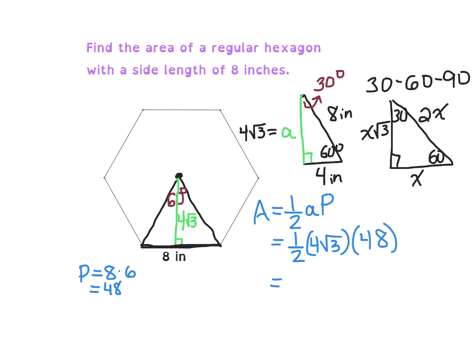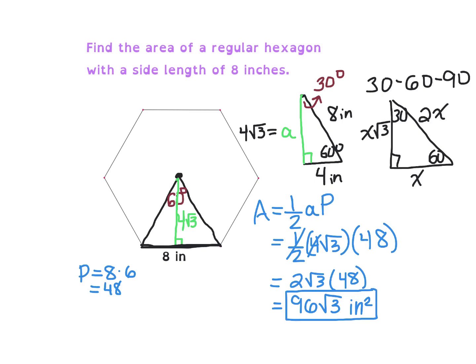I'm going to simplify ahead of time before I get my final answer. Half of 4 is 2, so really this is 2 times the square root of 3 times 48. 48 times 2 is 96. If you wanted to leave it with the square root intact, you could write 96 times the square root of 3 square inches. Or if you wanted to multiply by the square root of 3, you get a final answer of about 166.277 square inches.